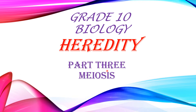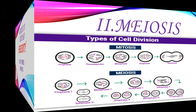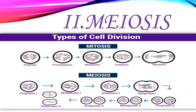Meiosis is also known as germinal division. Let's talk about meiosis. As I mentioned, the two types of cell division are mitosis and meiosis, but our concern in part three is to talk about meiosis only.